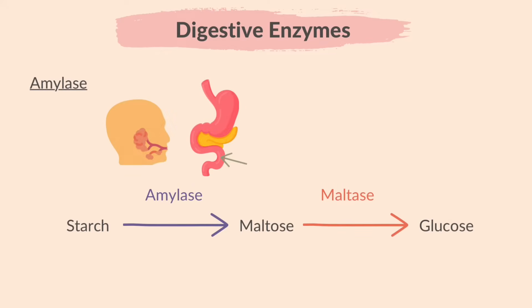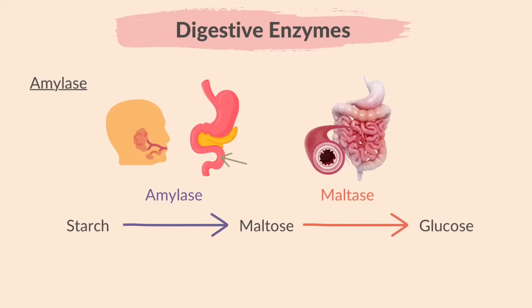Amylase acts in the mouth and the duodenum. Maltase does its job on the lining of the small intestine.